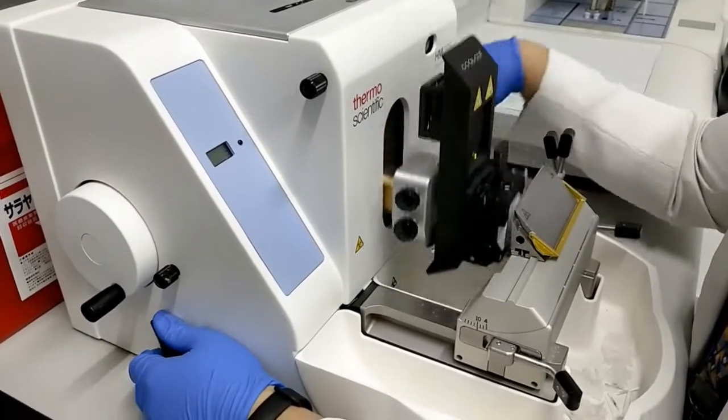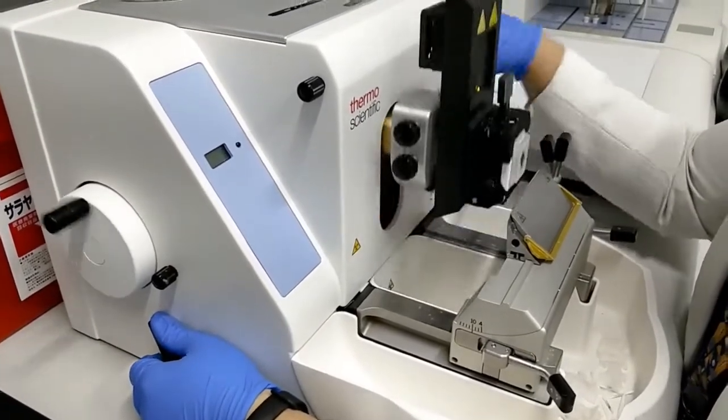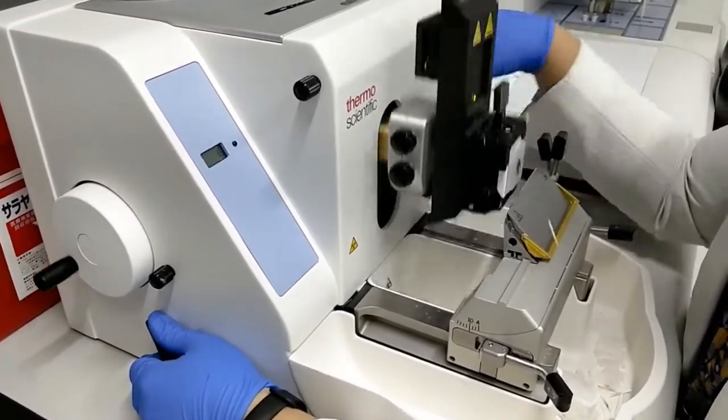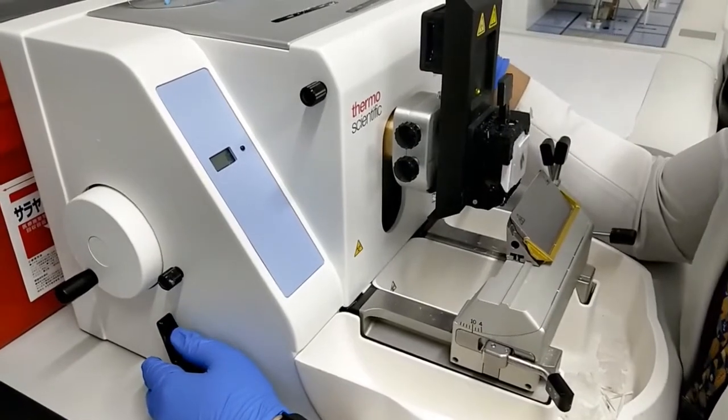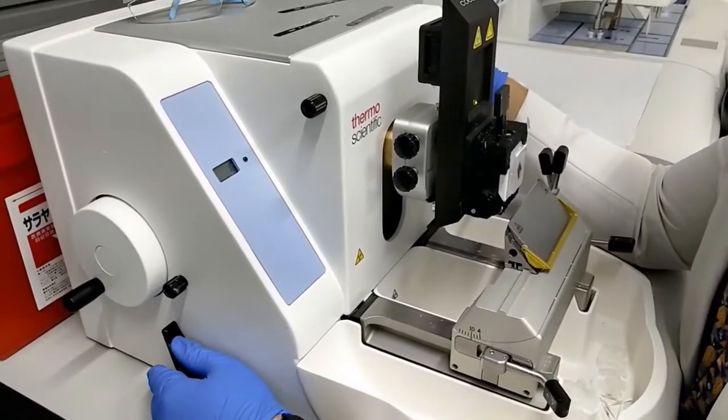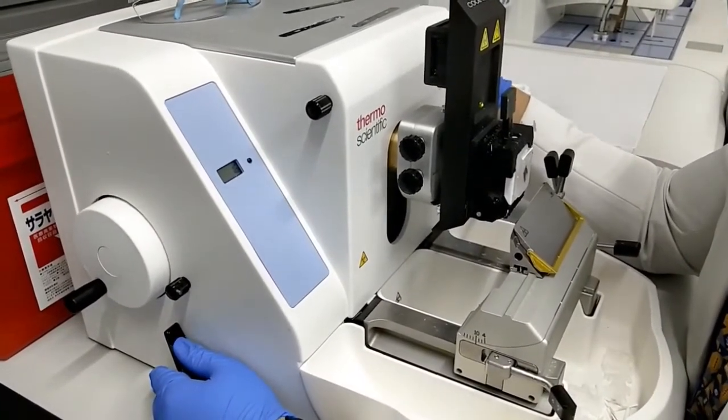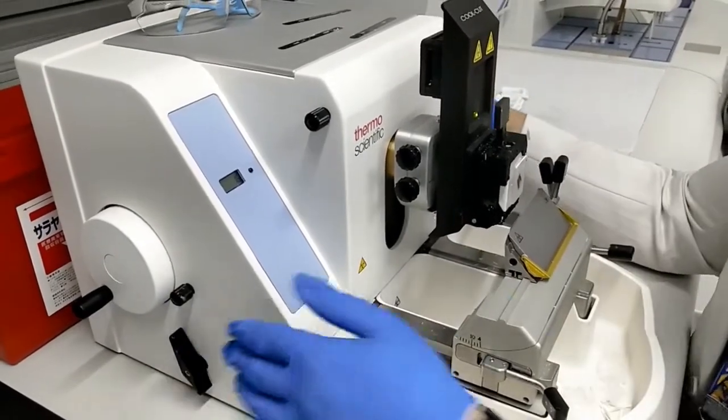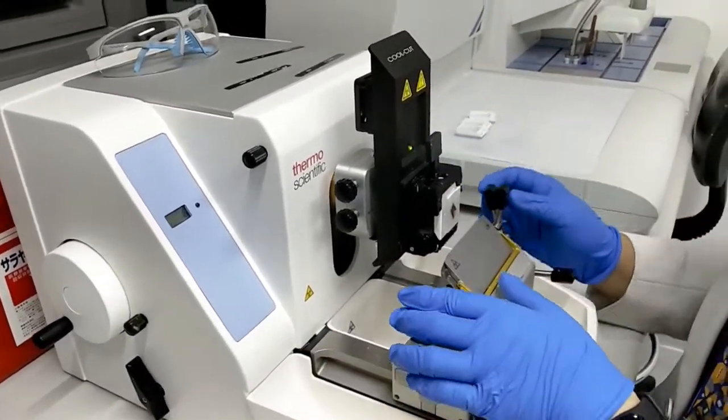Using the trimmer, we've removed excess tissue and excess paraffin wax. Once we're done with the trimming, we can move on with sectioning.